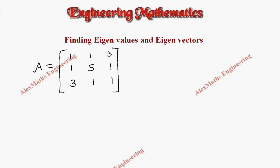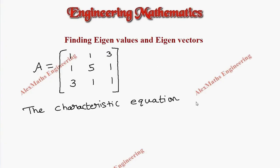Hi students, this is Alex. In this video we are going to find the eigenvalues and eigenvectors of the given matrix A of order 3. The first part is to write the characteristic equation, which is the determinant of (A minus lambda I) equal to 0.